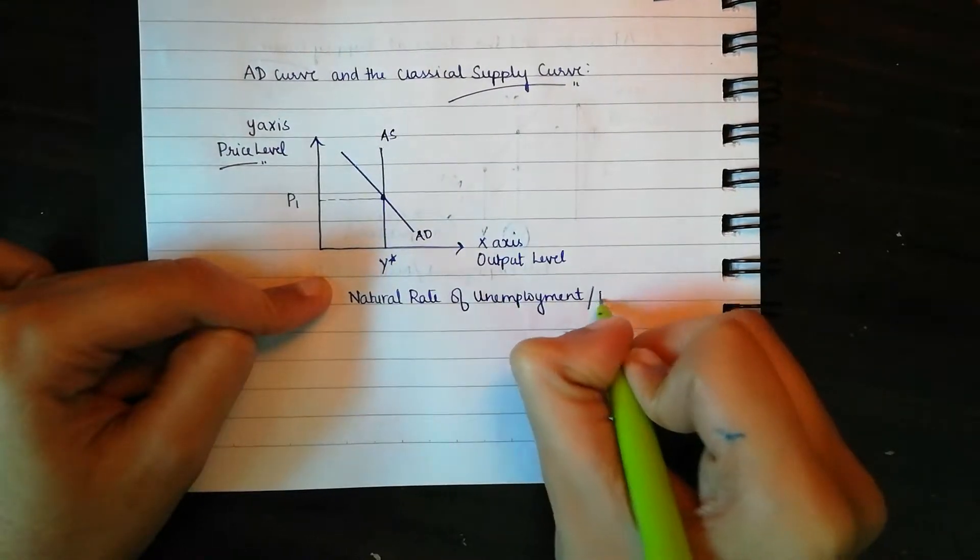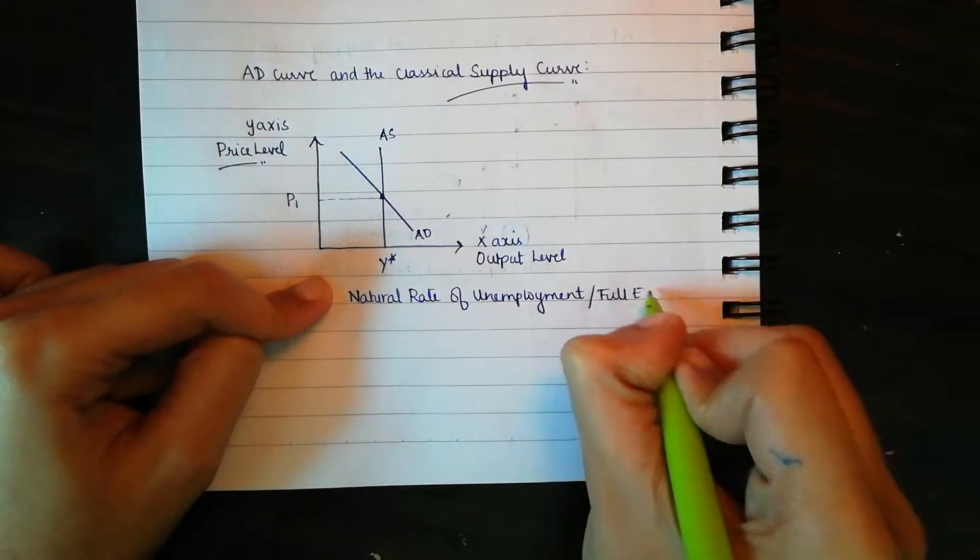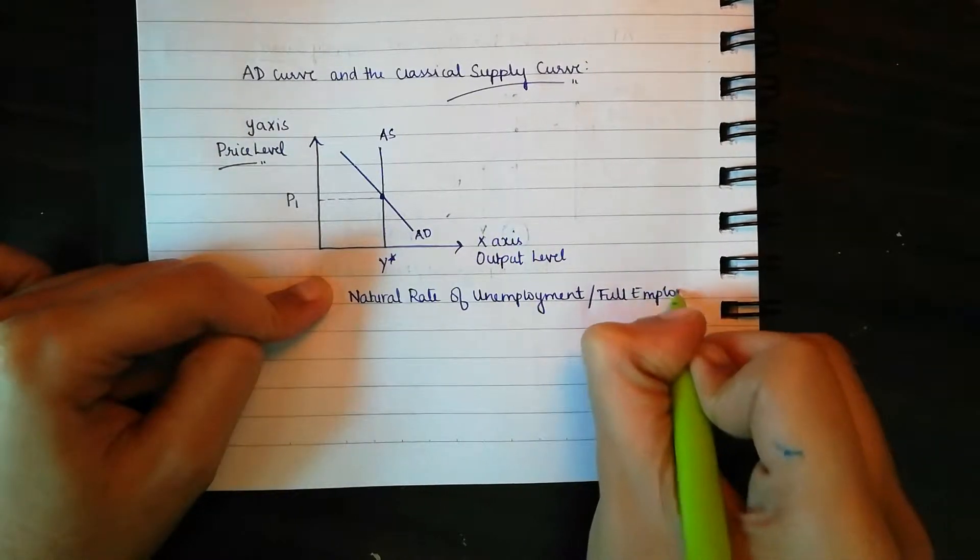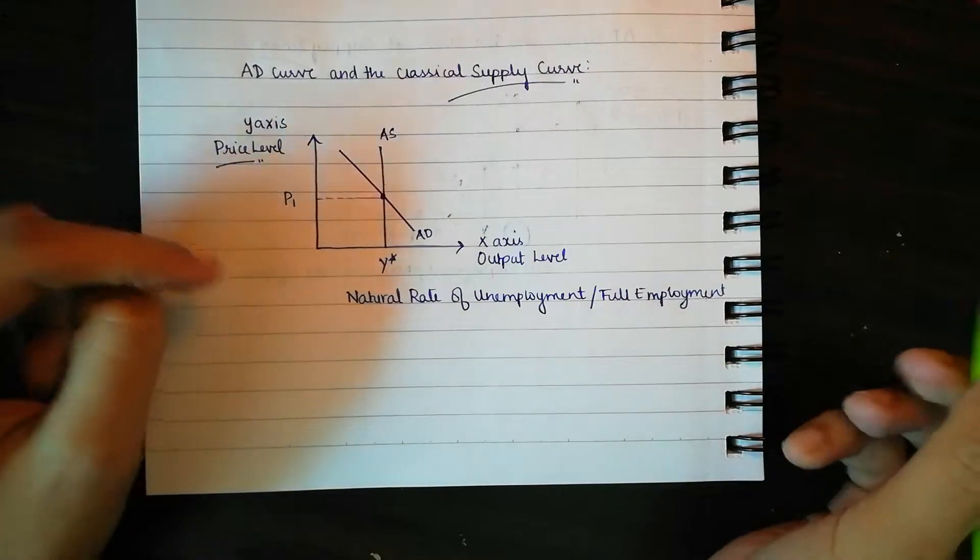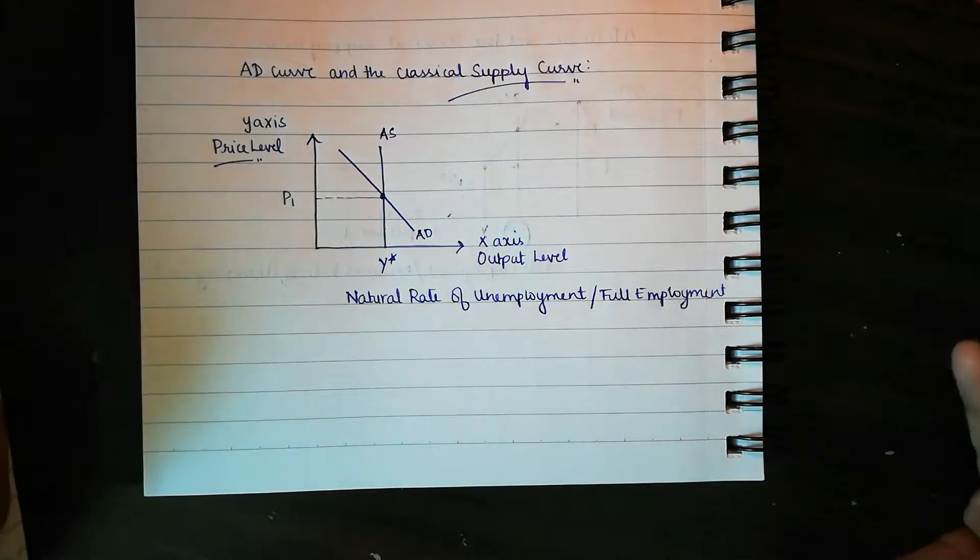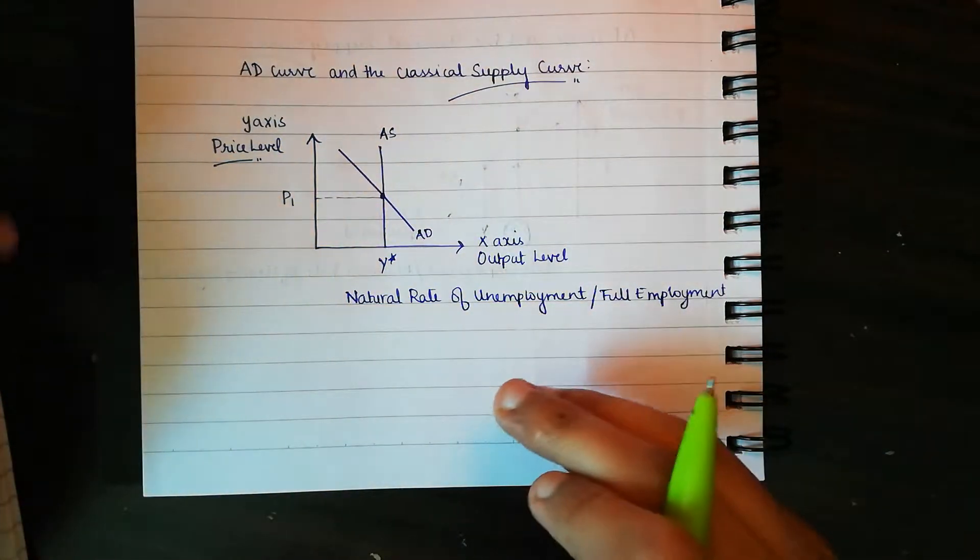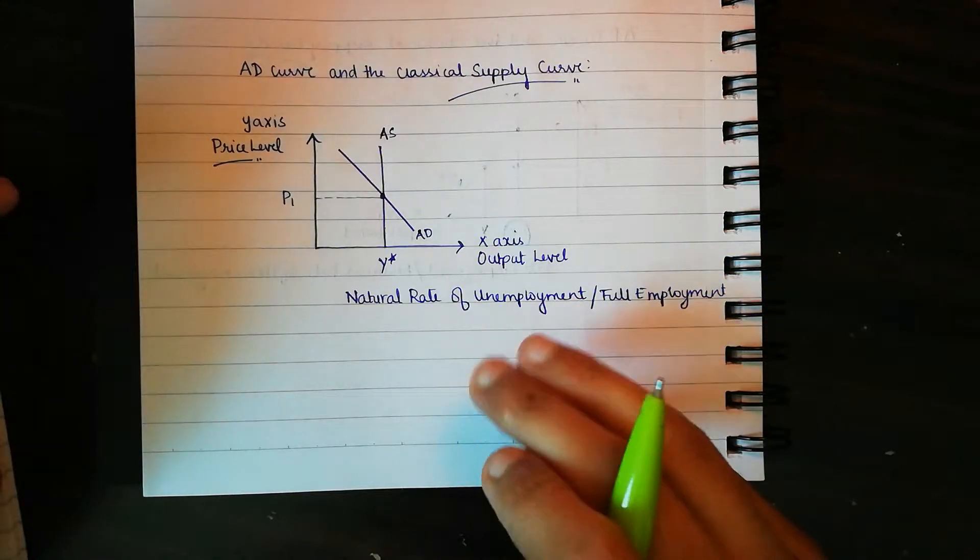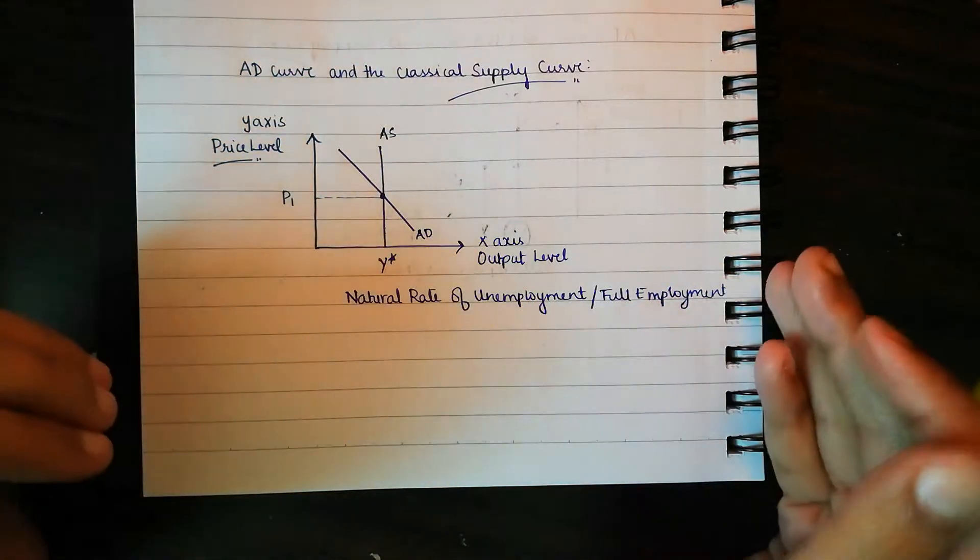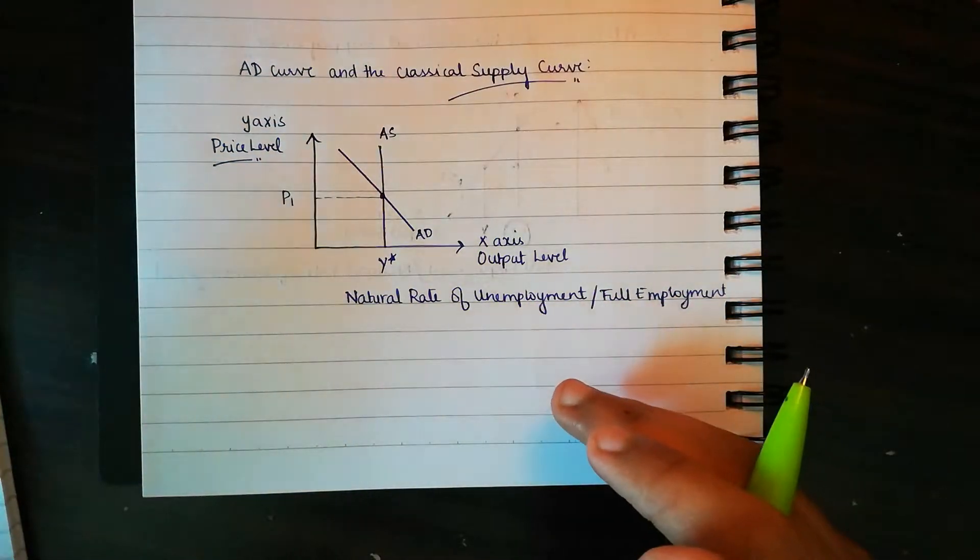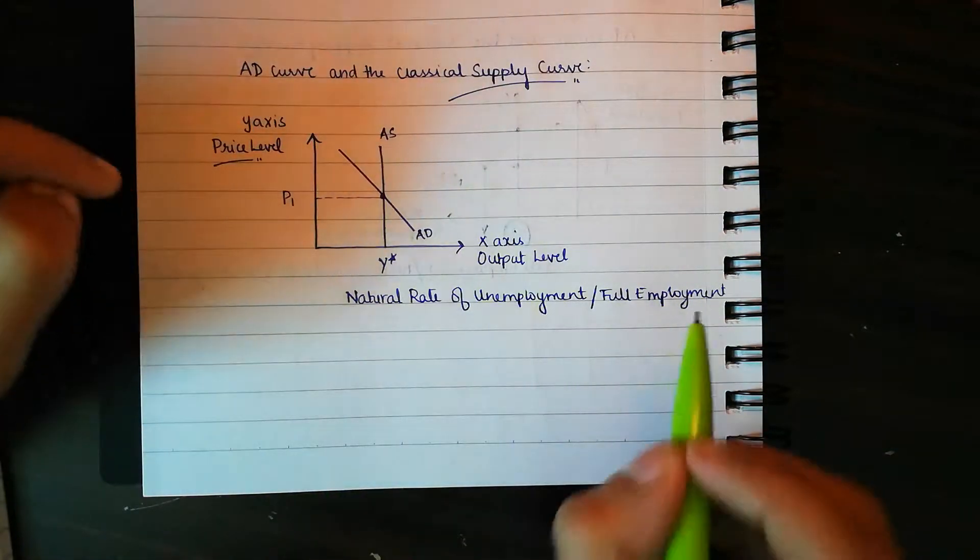Or full employment, meaning that there would be unemployment of four to five percent which is normal in an economy because some people are shifting jobs or trying to find jobs better suited for them. So a small amount of unemployment would exist and that's okay, that will be full employment or a natural rate of unemployment.